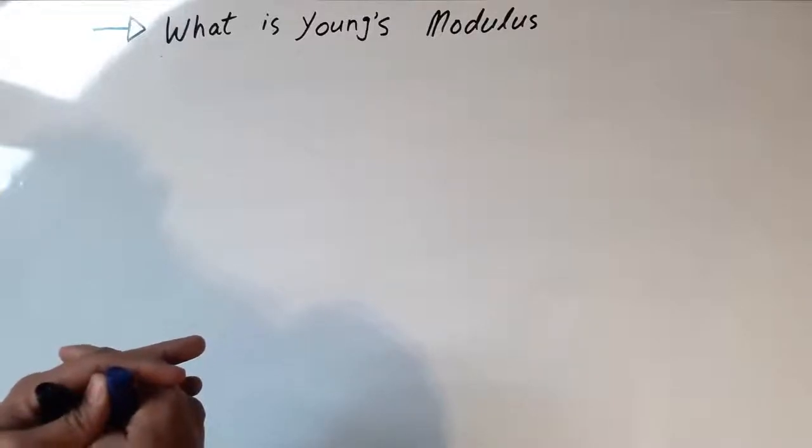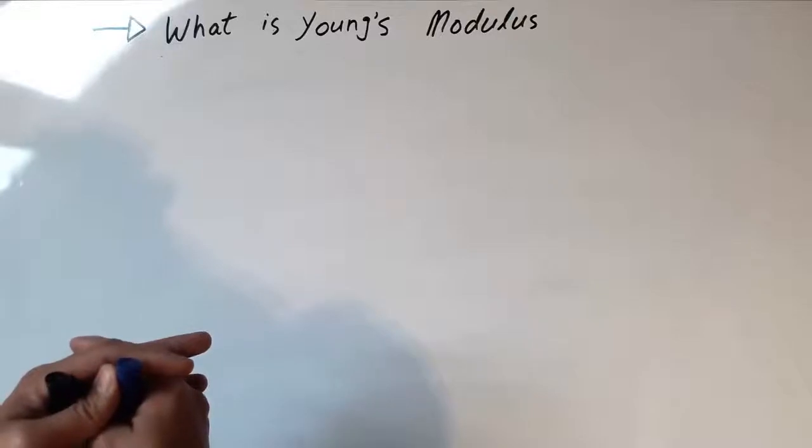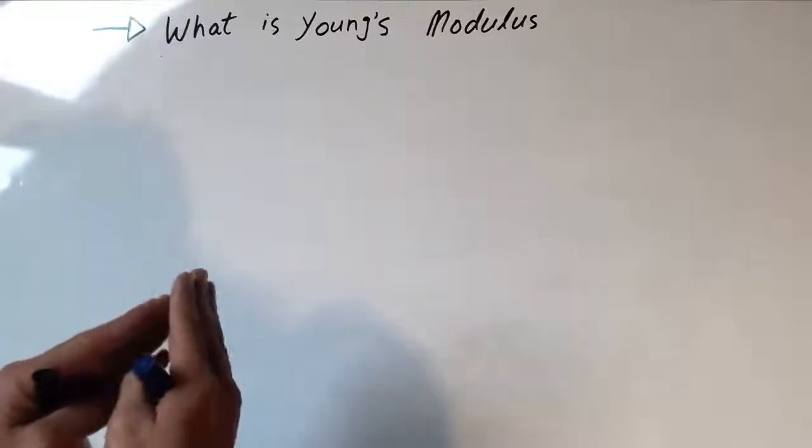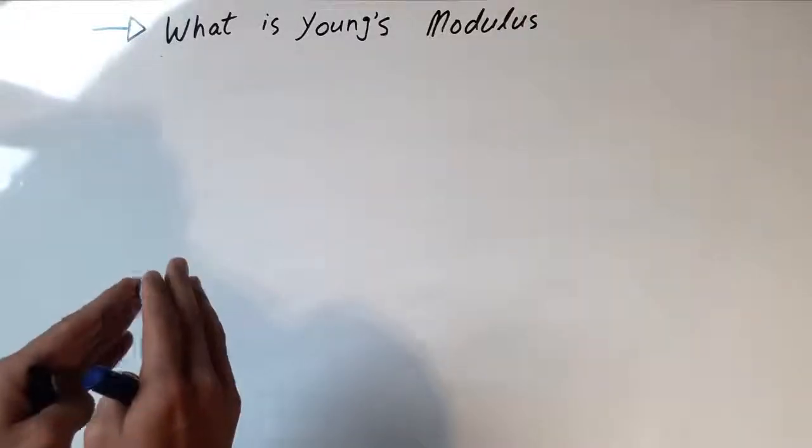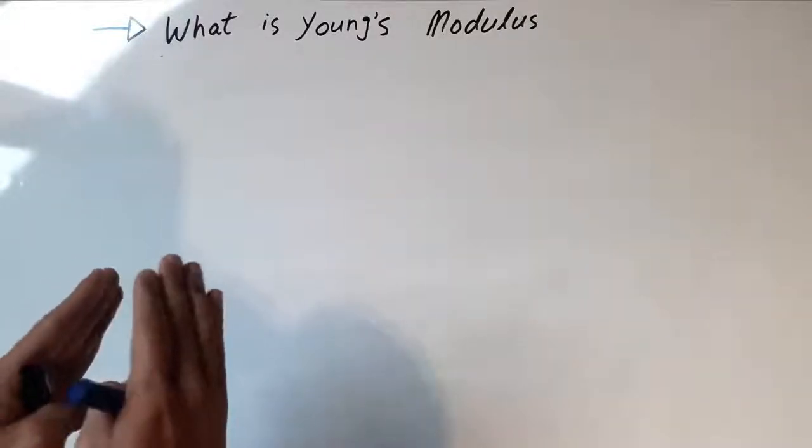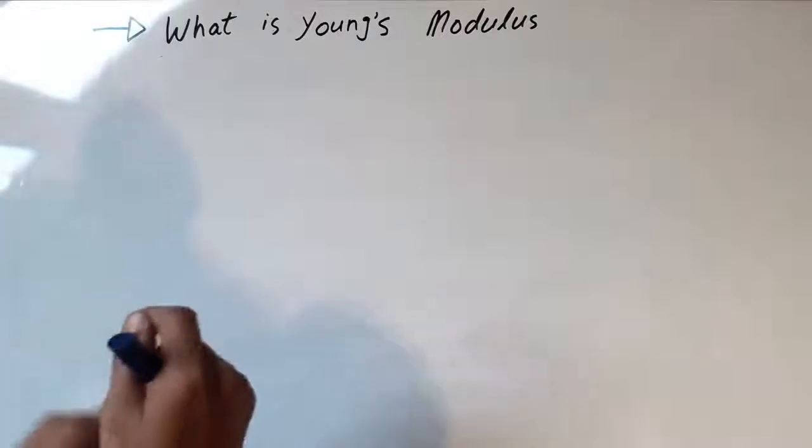Young's Modulus is a mechanical property that measures the stiffness of solid materials. It defines the relationship between stress and strain. We don't just use stress or strain; we use tensile stress and tensile strain.